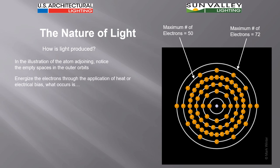Now we can energize these electrons through the application of heat or through electrical bias. If we do that, what occurs is the energized electrons now move to higher orbits with this stored energy because now what they want to do is break free and get away from the atom itself.